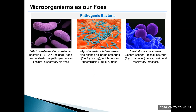Bacteria can be mainly classified into four types on the basis of their shape: cocci, spherical or oval-shaped; bacillus, rod-shaped; vibrio, comma-shaped; and spirilla, helical-shaped. Vibrio cholerae, a comma-shaped bacterium, is a pathogen usually carried by water and food. This bacteria easily attaches to chitin-containing shells of crabs, shrimps and other shellfish. This bacteria causes cholera upon entering the human body.